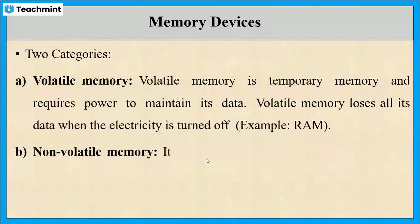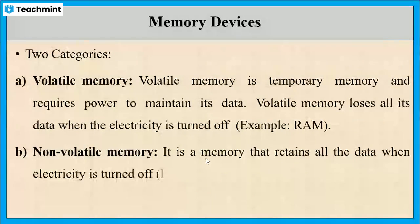The second classification is non-volatile memory. In this case, even when the power is turned off, this device will retain all the data. An example is read-only memory or ROM.